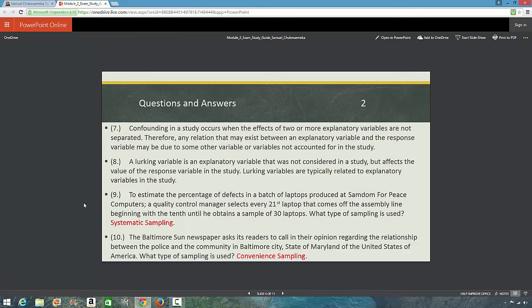To estimate the percentage of defects in a batch of laptops produced at some Dumb For Peas computers, a quality control manager selects every 21st laptop that comes off the assembly line beginning with the 10th until he obtains a sample of 30 laptops. What kind of sampling is this? We say it is systematic sampling. You can read those up in your textbook.